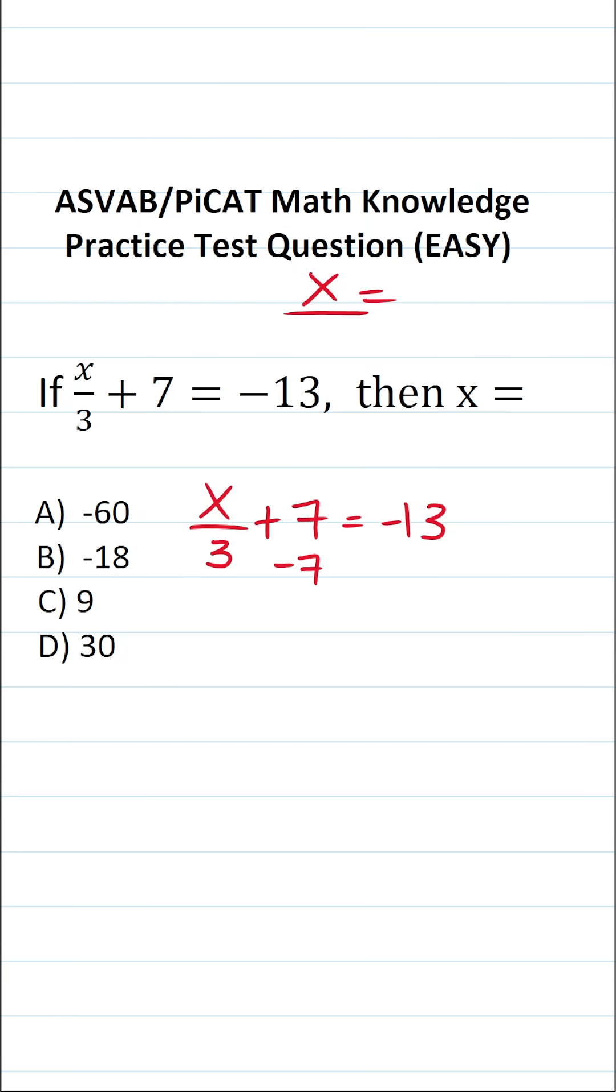So the first thing we're going to do is subtract 7 from both sides of the equation. This crosses out here leaving us with x over 3 on this side equals negative 13 minus 7 is going to be negative 20.